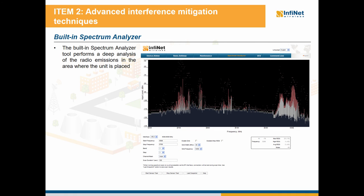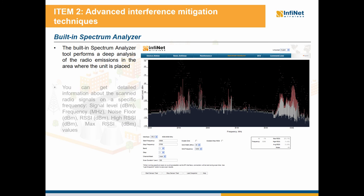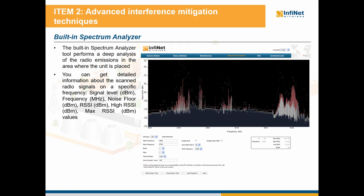The built-in spectrum analyzer tool performs a deep analysis of the radio emissions in the area where the unit is placed. The device will scan the radio spectrum on all the available specified frequencies. You can get detailed information about the scanned radio signals on a specific frequency, like signal level, frequency, noise floor, RSSI, and so on. You can perform different settings for the test from the button menu. The result is quite intuitive — the spectrum presents pronounced spikes where interferences are present, and by just clicking with the mouse at any frequency you will obtain all the details about the interference level.